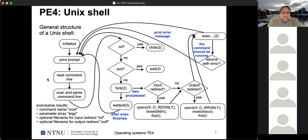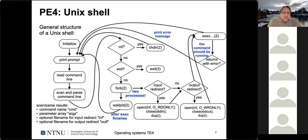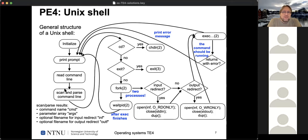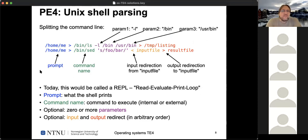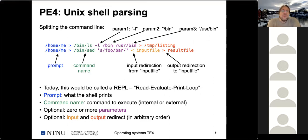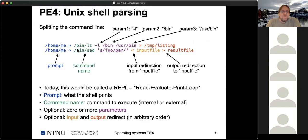After scanning and parsing the command line, we split it into semantic parts. A Unix command line looks like this: the shell prints a prompt, and parameters on the command line are separated by whitespace — spaces or tabs. The first item is always the command, for example /bin/ls or /bin/sed. Then there are an optional number of parameters also separated by whitespace — for /bin/ls the first parameter would be -l, the second /bin, the third /usr/bin.